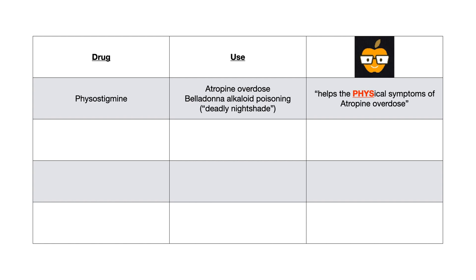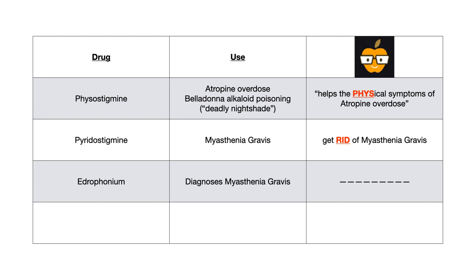Pyridostigmine is used to treat myasthenia gravis — mnemonic: this drug gets rid of myasthenia gravis. Edrophonium is used in the diagnosis of myasthenia gravis. Donepezil is used in the treatment of Alzheimer's disease — mnemonic: 'his memory is done' for done-epezil.